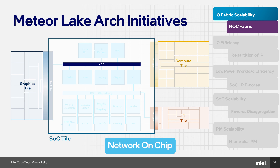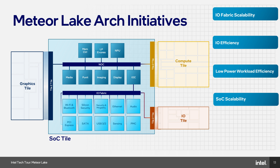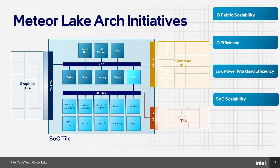Our NOC is a cache-coherent fabric. The devices attached to it include the compute tile and the graphics tile. Inside the SOC we have media, display, imaging, our new NPU, and low-power SOC e-cores. Then we have the memory controller, power management controller, and a bridge to our IO fabric. So we have two main fabrics: the NOC fabric and the IO fabric.